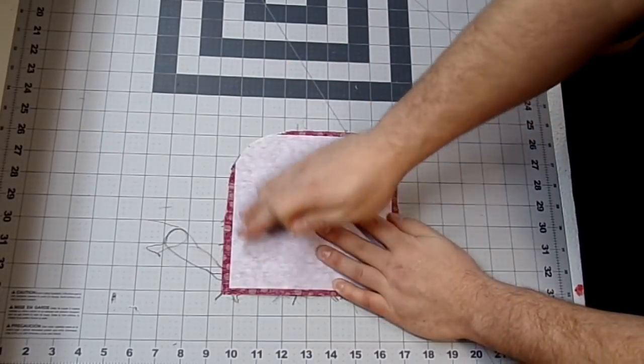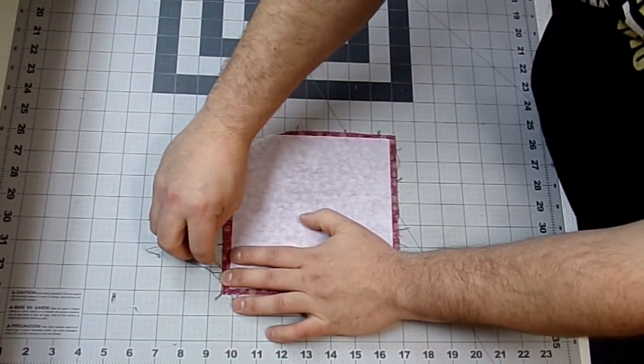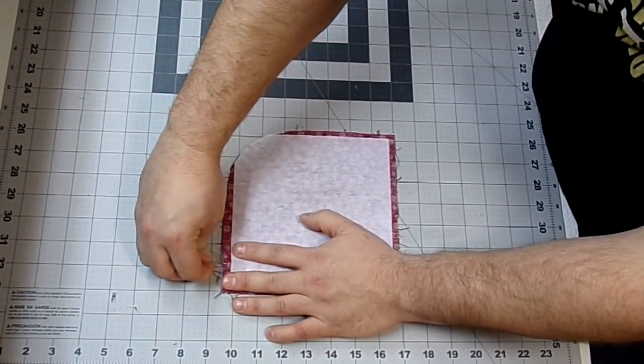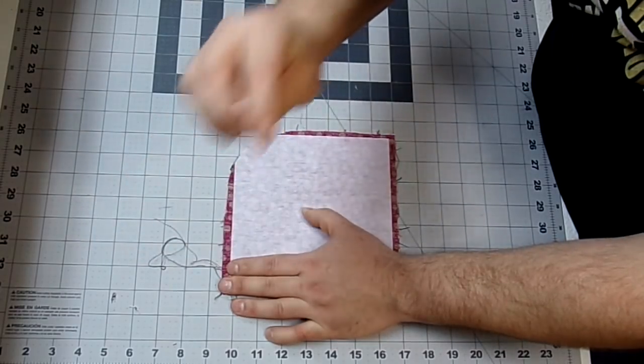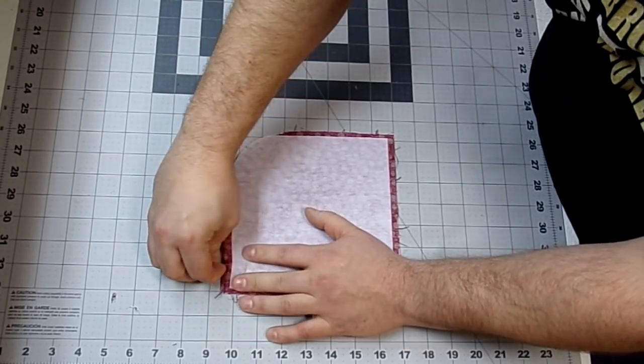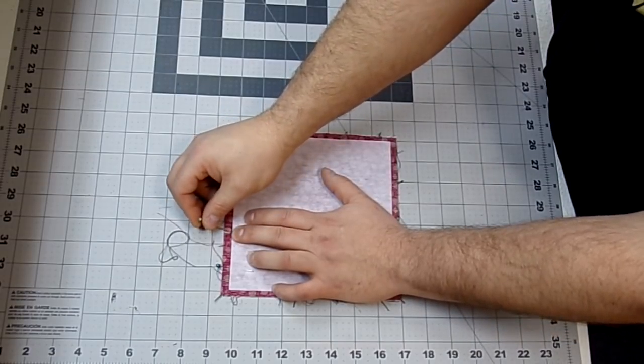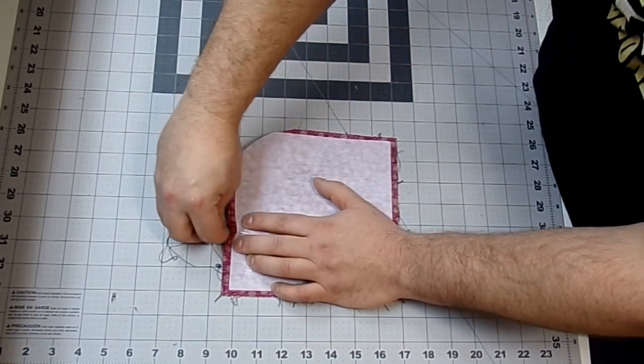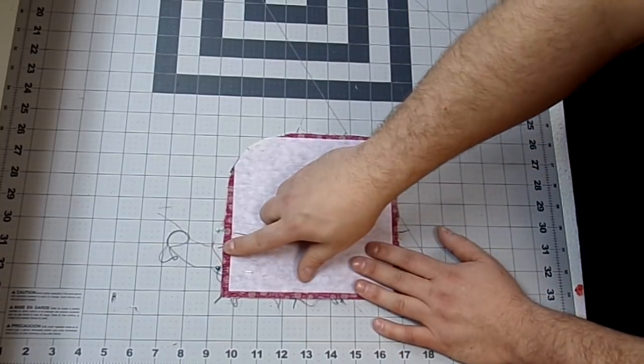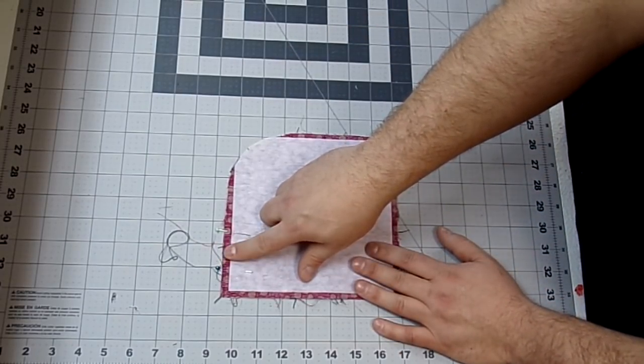And up here at the top, I'm going to come over an inch and stick a pin. And then I'm just going to come an inch and a half over from that and stick another pin. Now this is going to be our opening for turning, so you're going to want to leave this open.